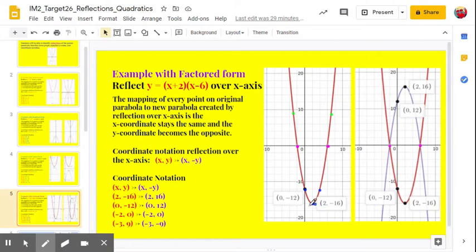Let's start with the vertex, 2 negative 16. Notice the scaling on the graph here, we're scaled by 2s. So 2 negative 16, that's 16 below the x-axis, so I'm going to go 16 above the x-axis. There's my point. On the purple parabola here, that's going to be the reflected parabola.